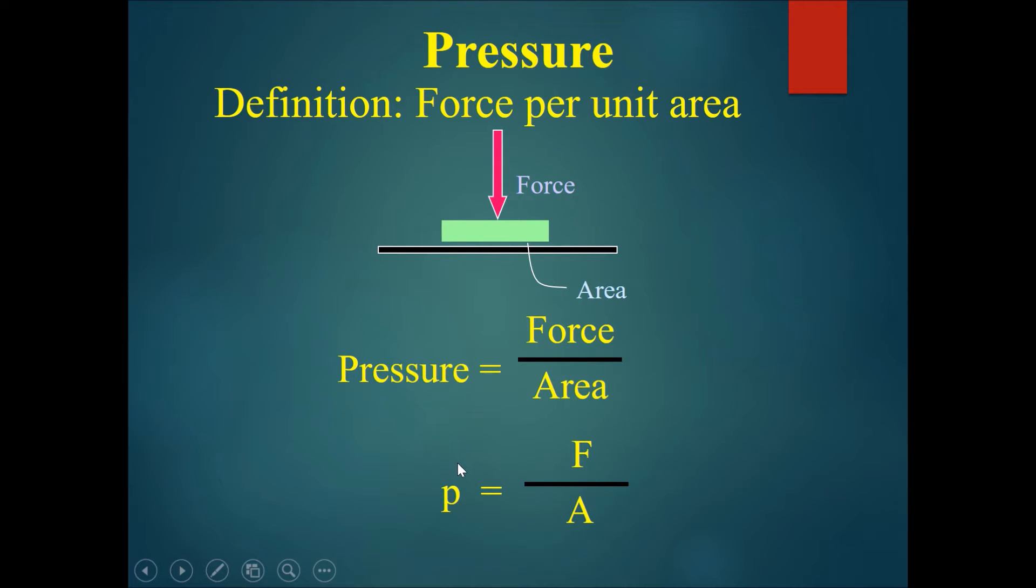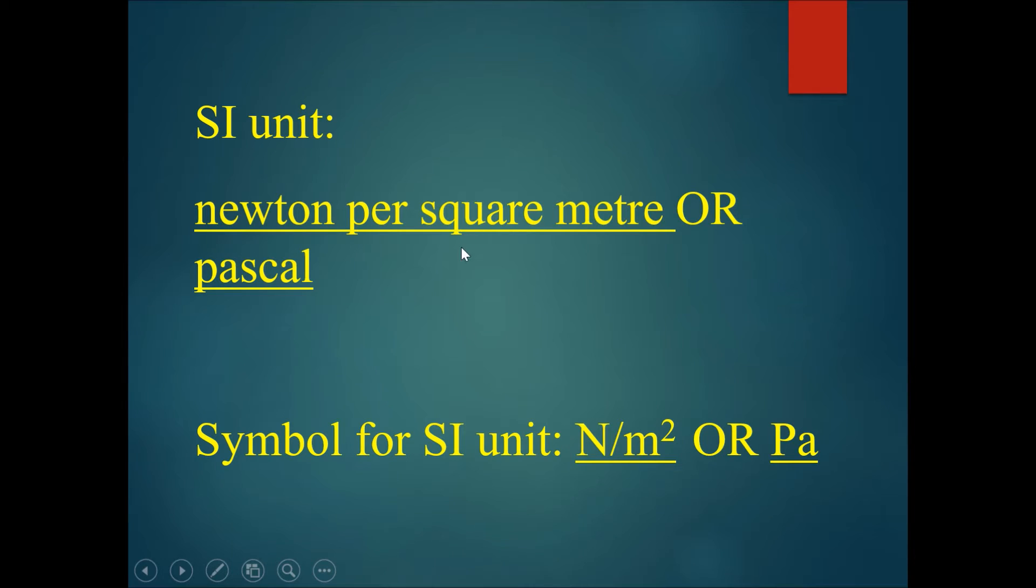The formula could be summarized as pressure equals force over area, P = F/A. SI unit for pressure is the newton per square meter or the pascal. The symbol for the SI unit is newton per meter squared or Pa.